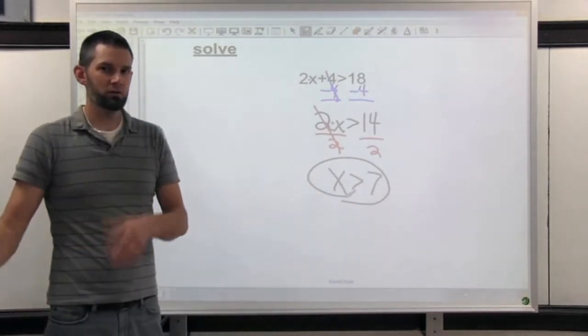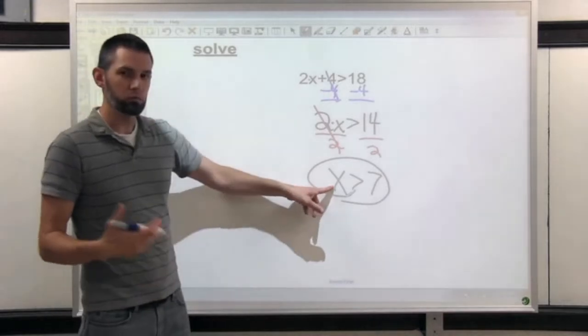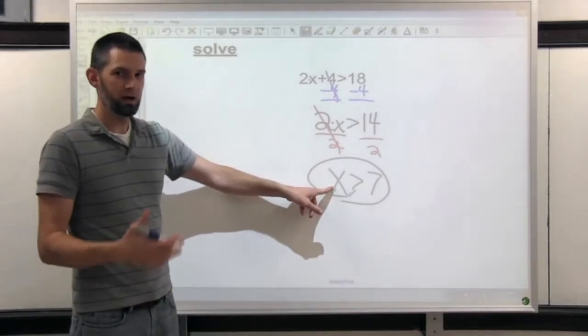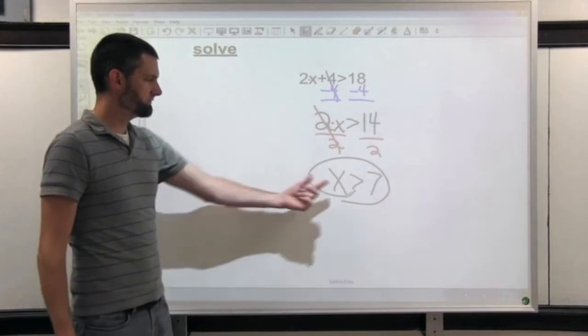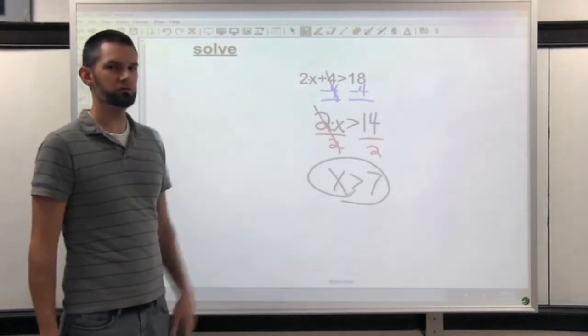That means every value greater than 7: 7.1, 7.5, 8, 108. Any value greater than 7 will make this true.